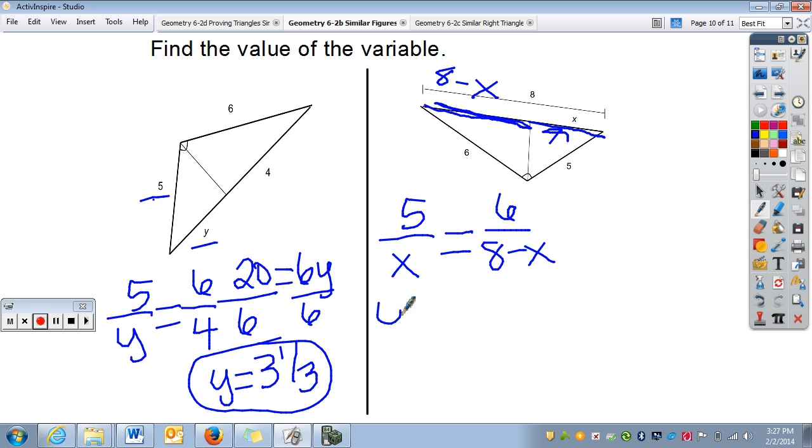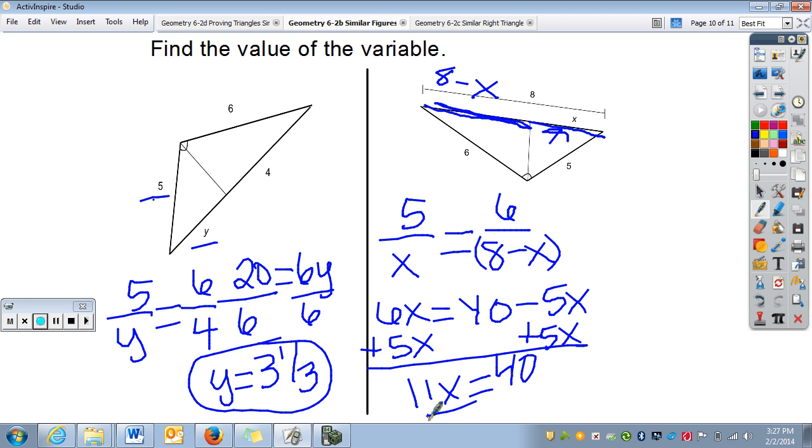Cross multiply. I get 6X. We're going to distribute the 5 through. We get 40 minus 5X plus 5X. We get 11X equals 40. Divide by 11. X comes out to be 3 and 7 elevenths. Sorry. That's a 7. Make that a little clearer. 3 and 7 elevenths.